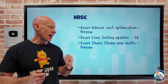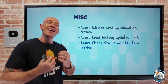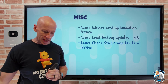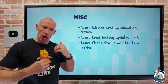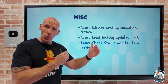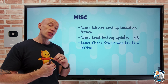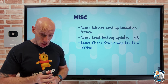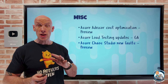Azure Chaos Studio has some new faults in preview — and by new faults, I mean new fault types I can use in experiments to simulate real-world activities, not actual bugs. One of them lets me stop an App Service — functions, API apps, and mobile apps — for the duration of a fault during an experiment, helping simulate App Service outages. There's also a new network packet loss option for VMs and virtual machine scale sets, so I can simulate network congestion or hardware issues. And Chaos Studio is now available in the Southeast Asia region.